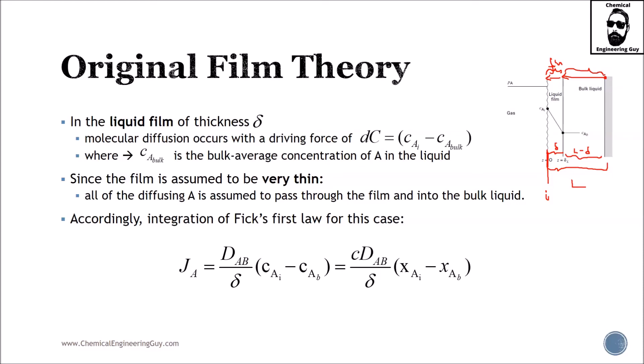Molecular diffusion occurs with a driving force of the change of concentration, where CA bulk is the bulk concentration of the liquid. Since the film is assumed very thin, all diffusing A is assumed to pass through the film into the bulk liquid, meaning no accumulation in the film.